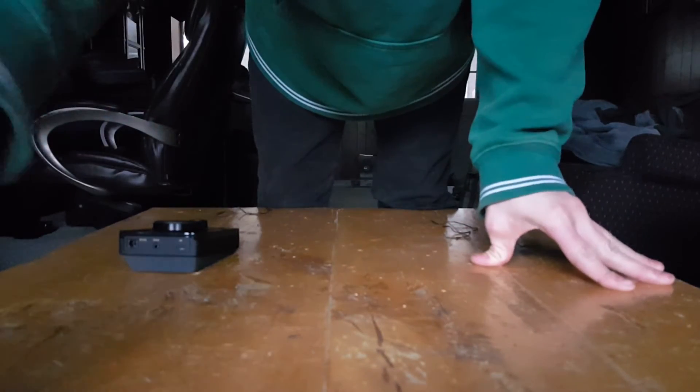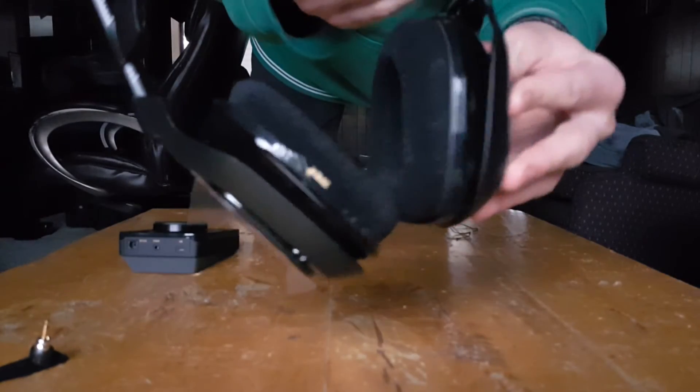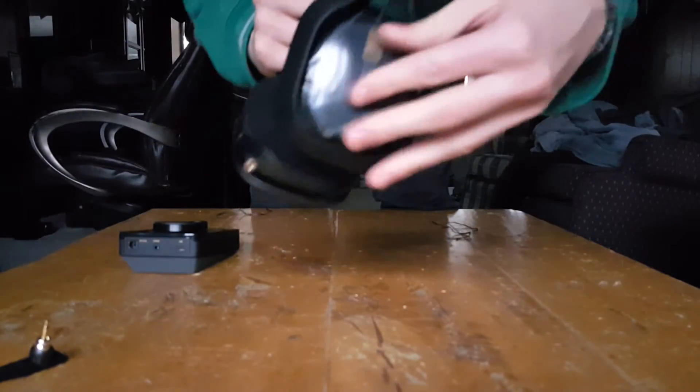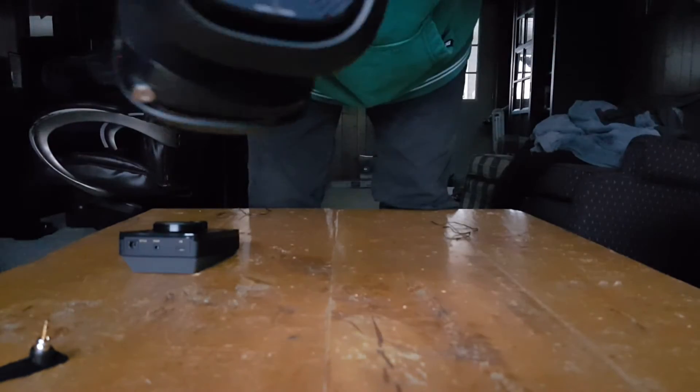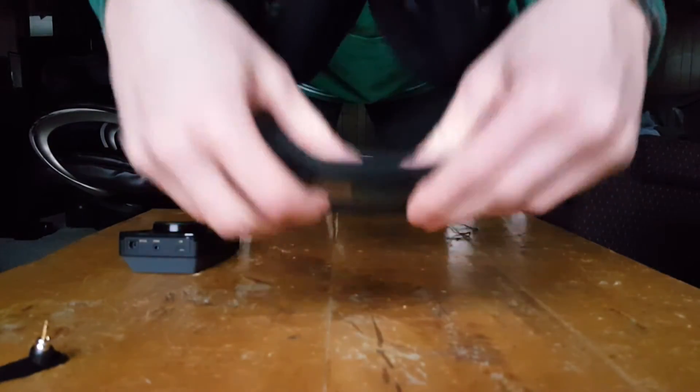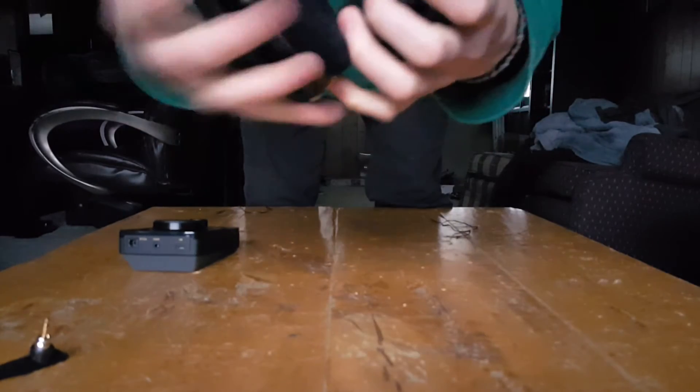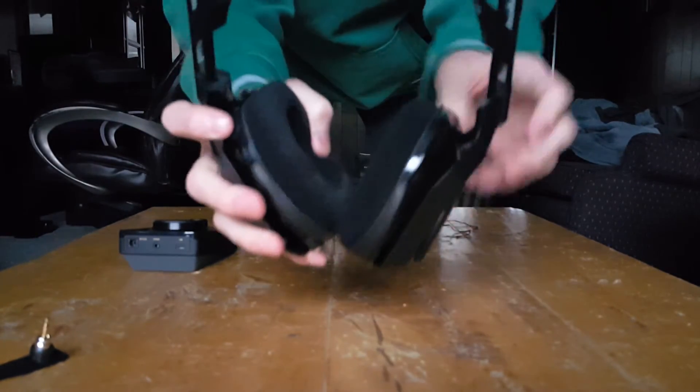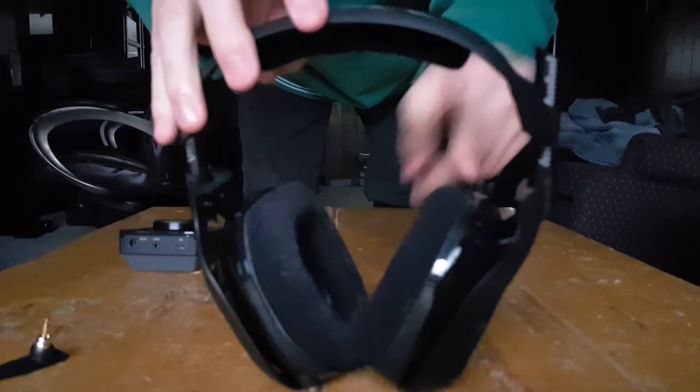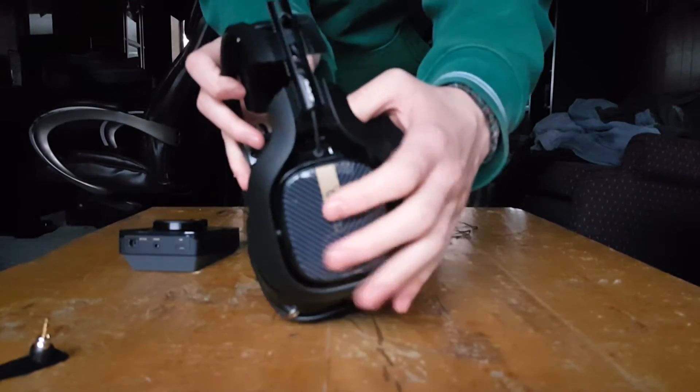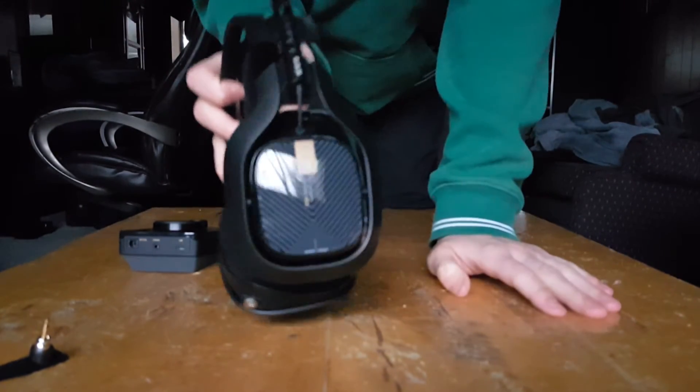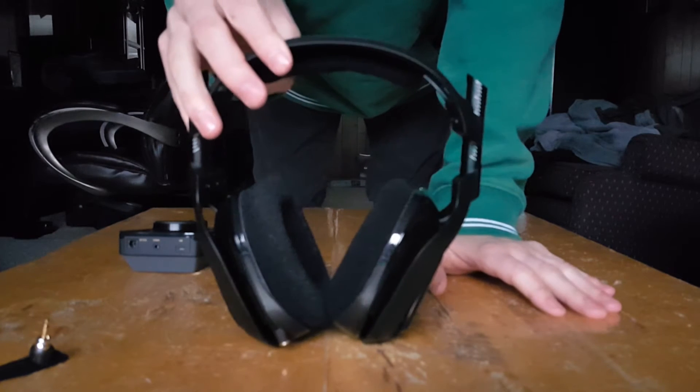Here is the A40 TR headset. You can peel the plastic off either side - I just love that, so awesome. Already I can notice the memory foam right here is just way better than both the Astro headsets I had before. The cups feel a lot nicer.